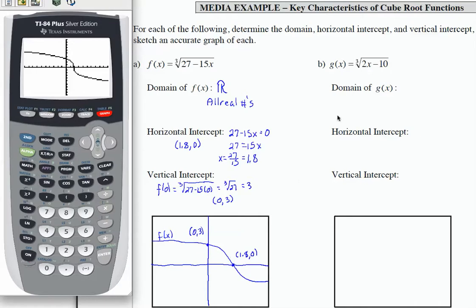For function g(x), it's also a cube root, which means the domain is all real numbers.